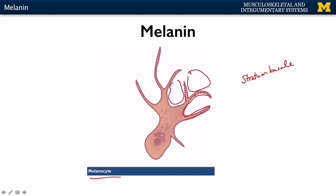Remember that the most numerous cell of the epidermis is your keratinocytes. The melanin pigment will move from melanocytes into the keratinocytes in order to protect the nuclei and subsequently the DNA of your keratinocytes.